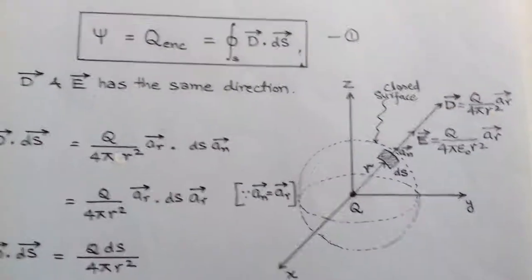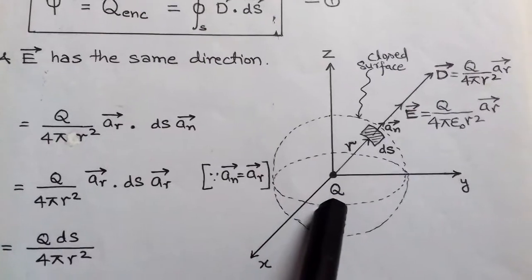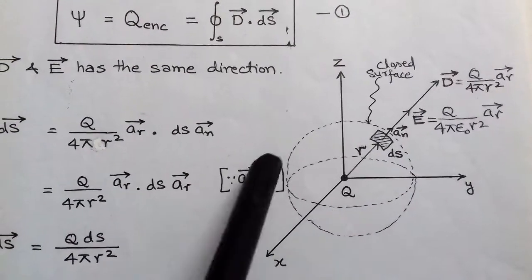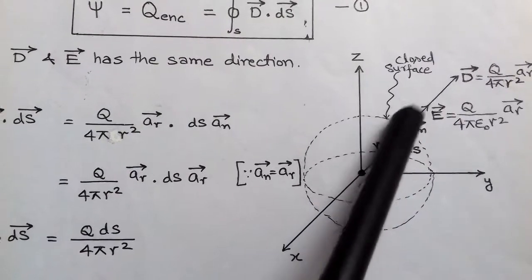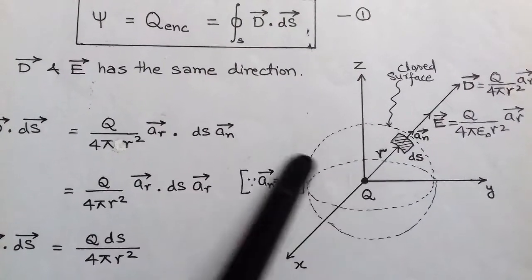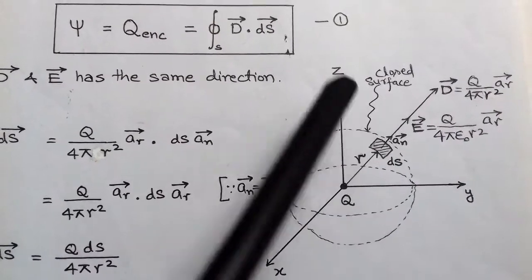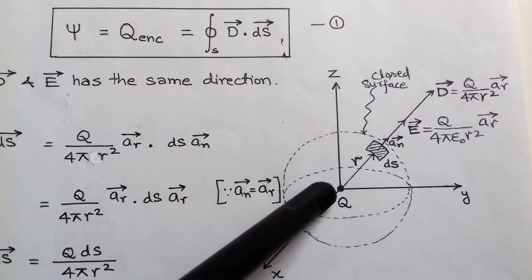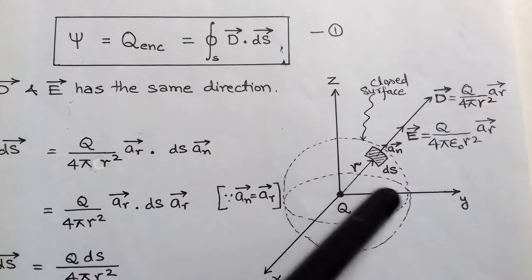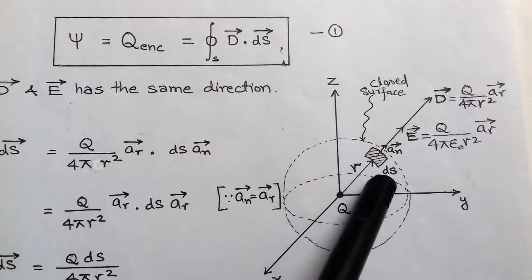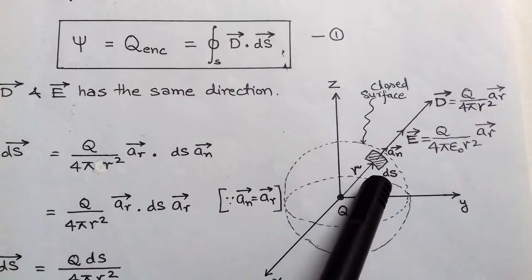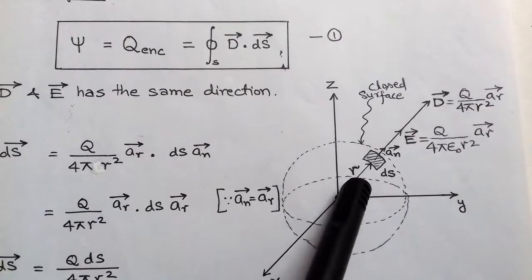To understand Gauss's law, we consider a positive charge situated at the origin. Since this is a positive charge, the electric field originates from it and terminates to infinity in all directions. We assume a closed surface. Since the charge is spherical in shape, we consider an assumed closed surface. On this closed surface we first assume a small differential surface dS which is at a distance of small r.